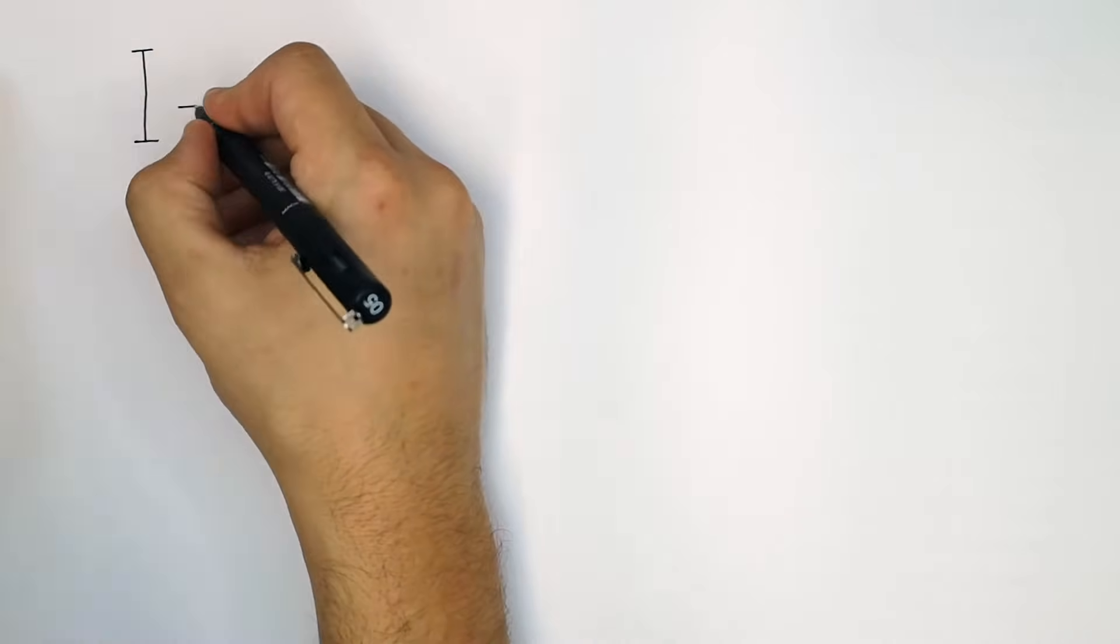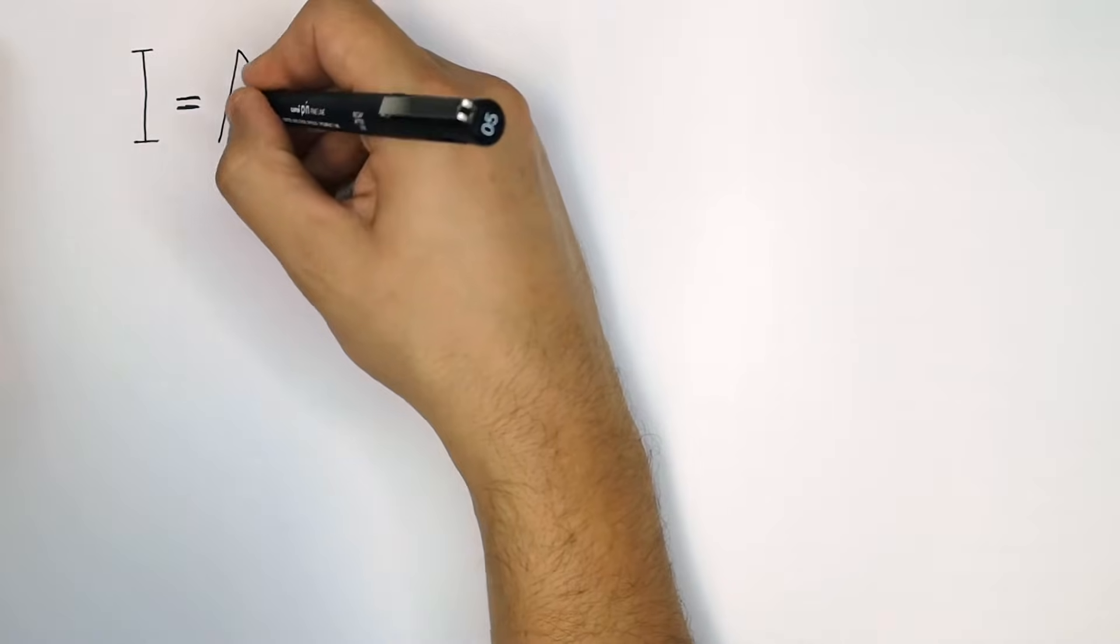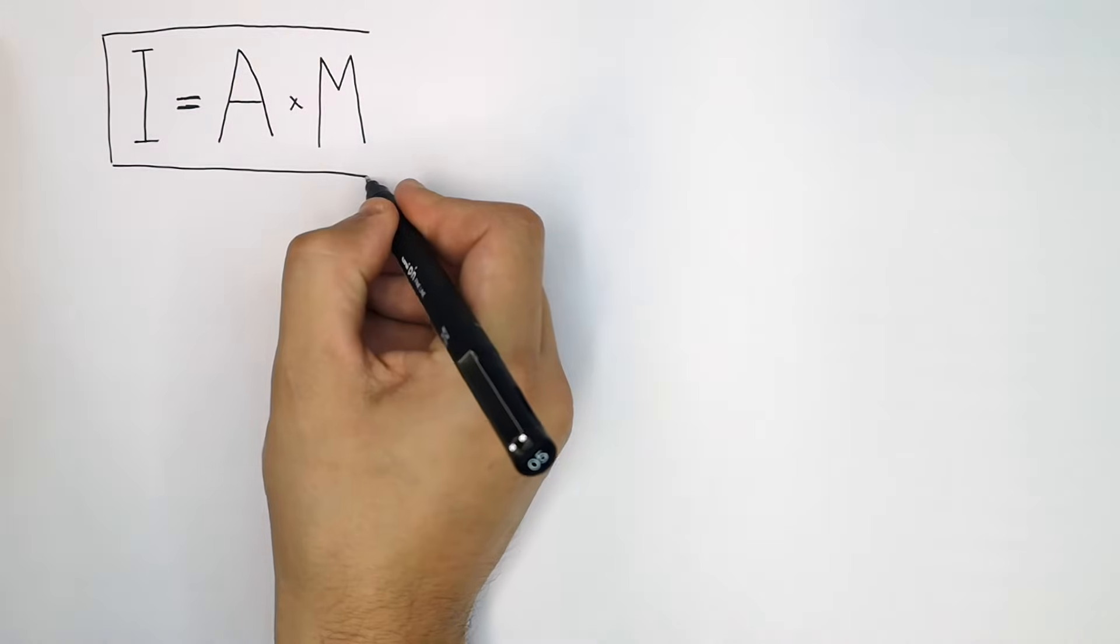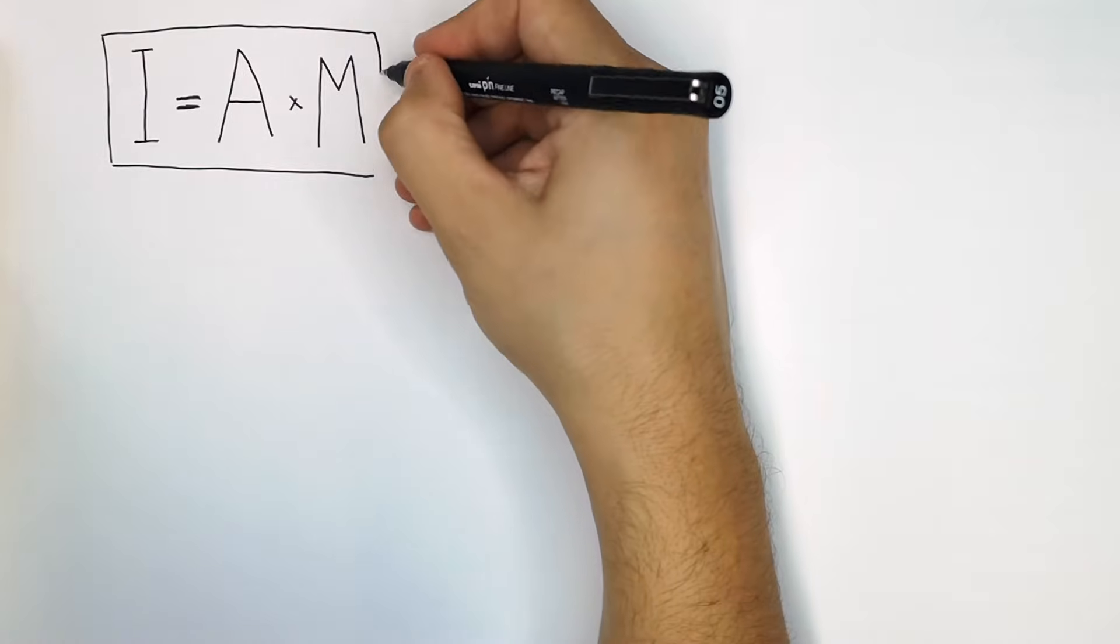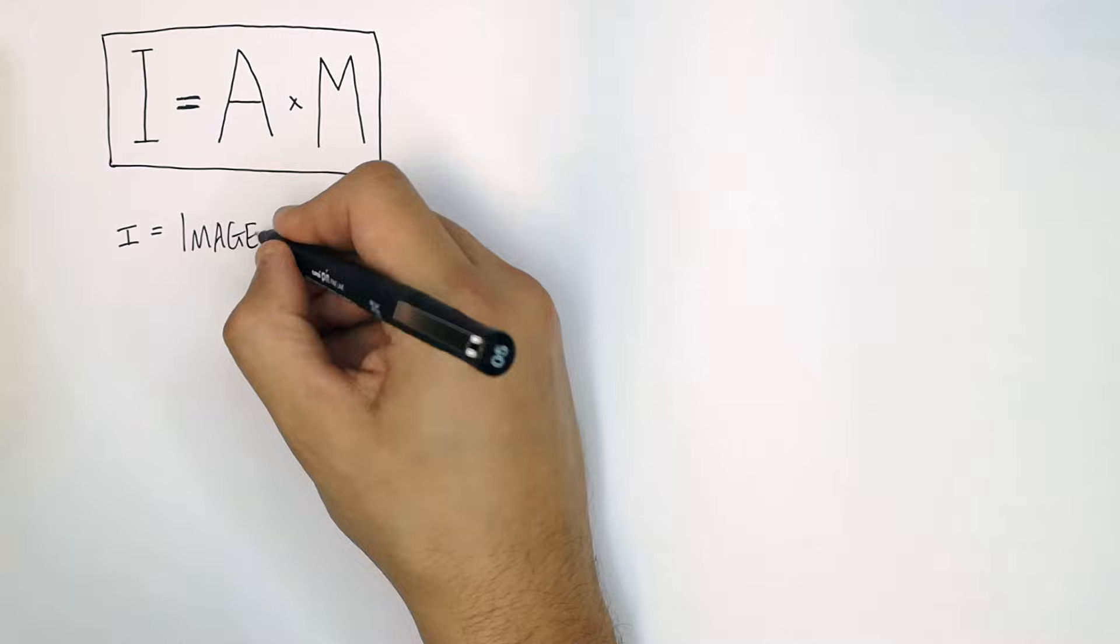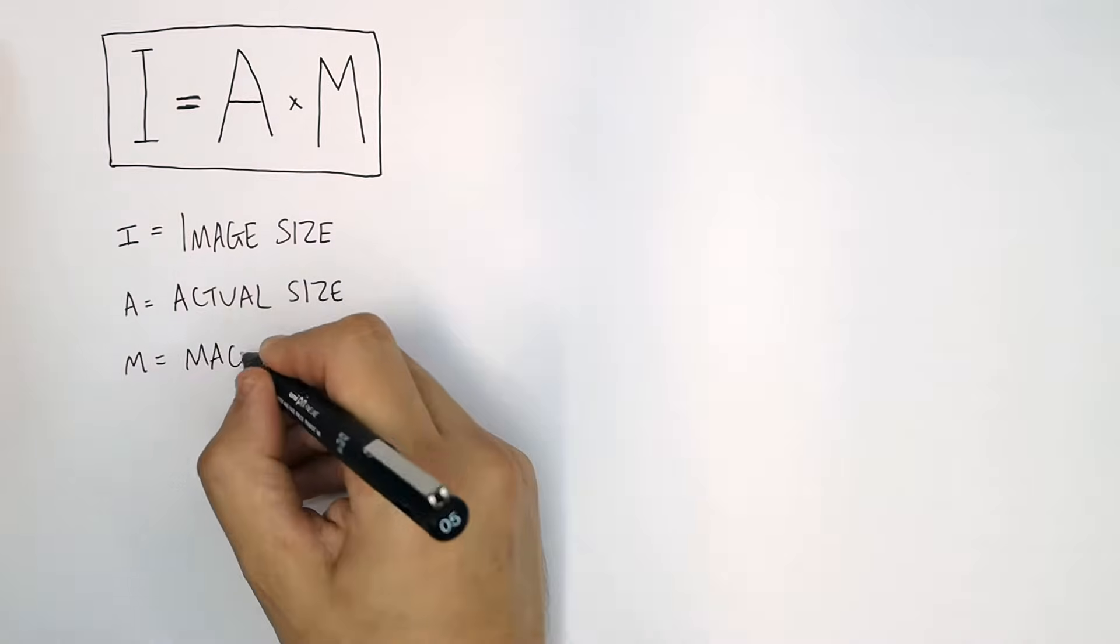When calculating magnification, you always write I = A × M. The I is the image size, the A is the actual size, and the M is the magnification.